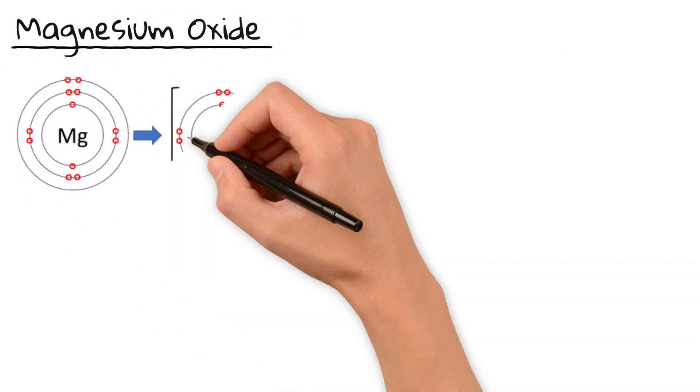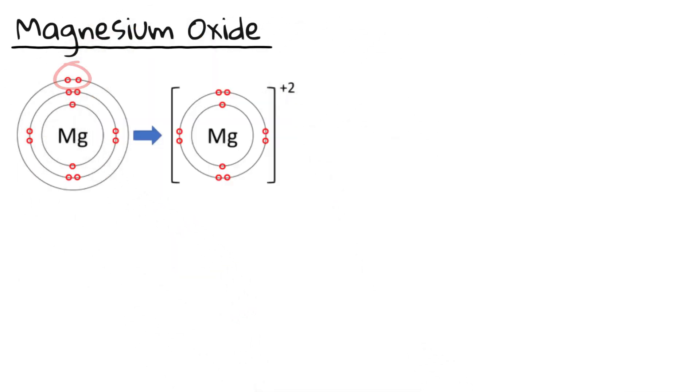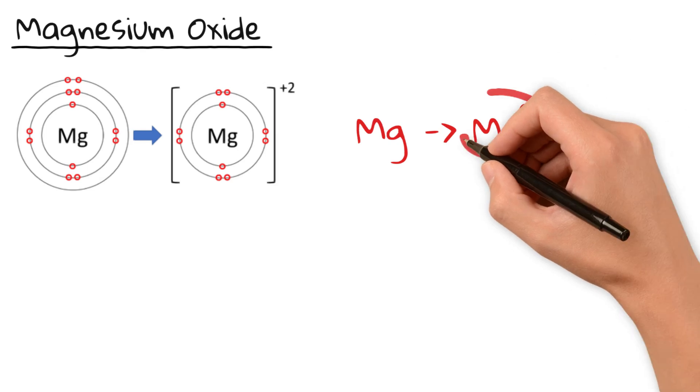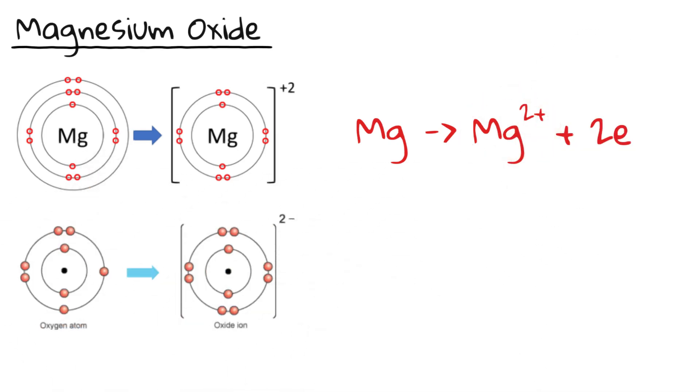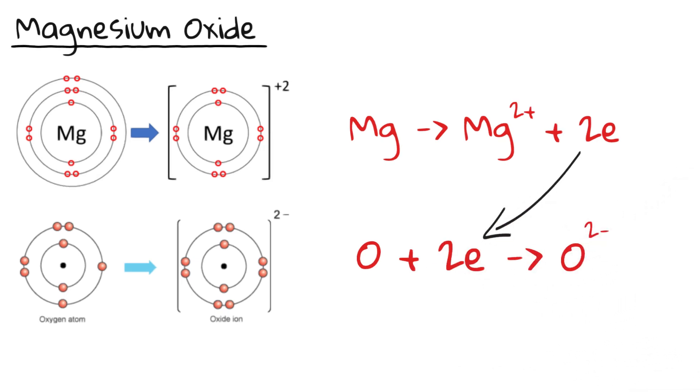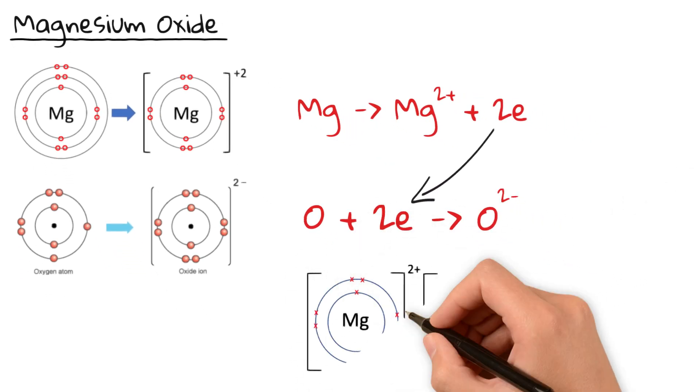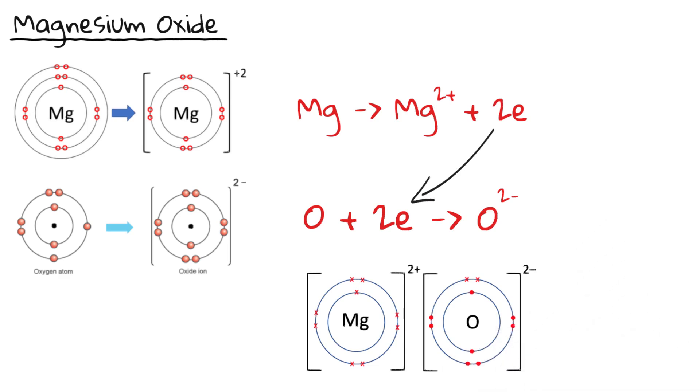Magnesium is a metal with two electrons in its outer shell. It loses both electrons to form Mg2+. Oxygen is a non-metal with six electrons in its outer shell. It gains those two electrons to form O2-. The Mg2+ and O2- ions attract, forming an ionic bond.